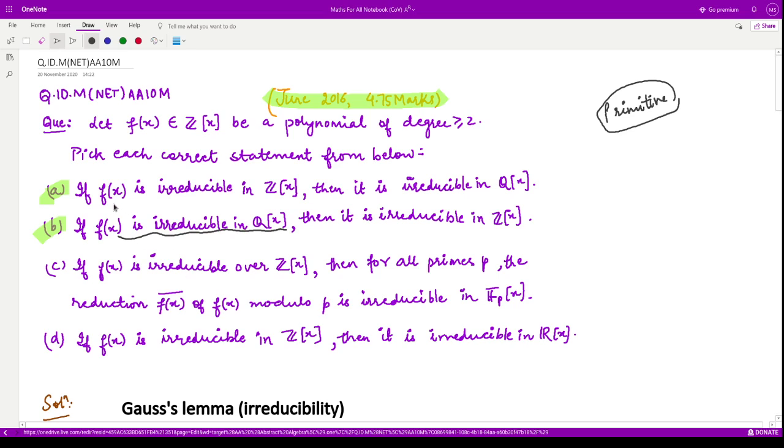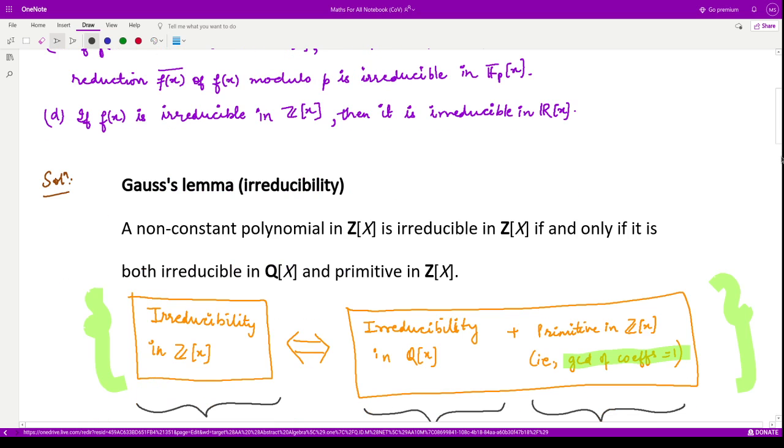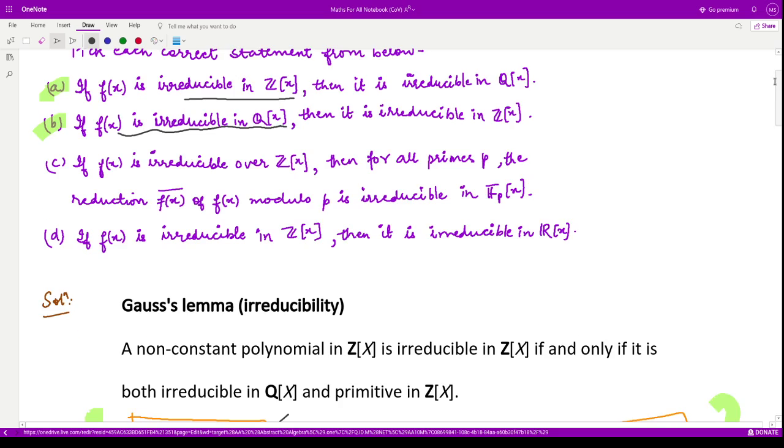Now the first option says f is irreducible in Z[x]. This is given to us. If f is irreducible in Z[x], it implies both these conditions are true. So in particular this condition is also true. Therefore option A is the correct option.